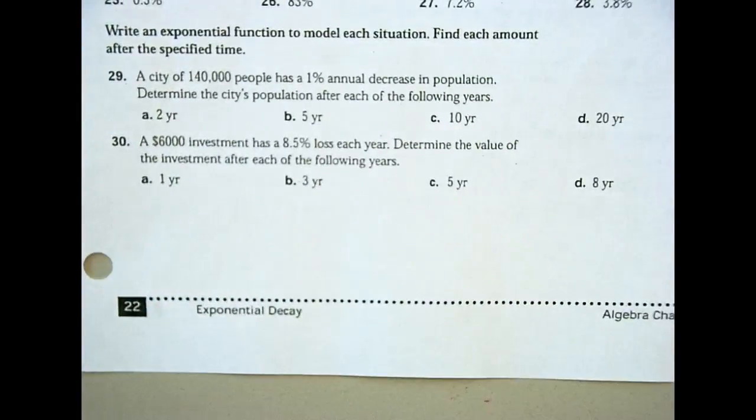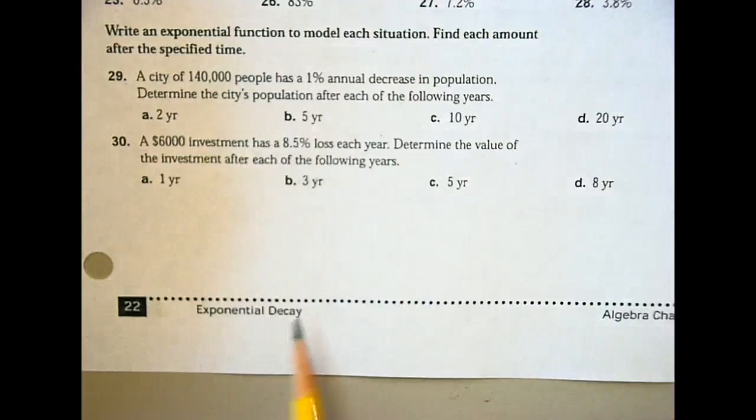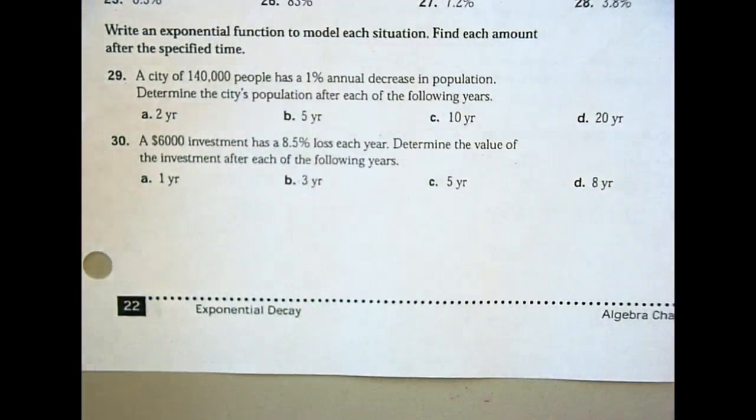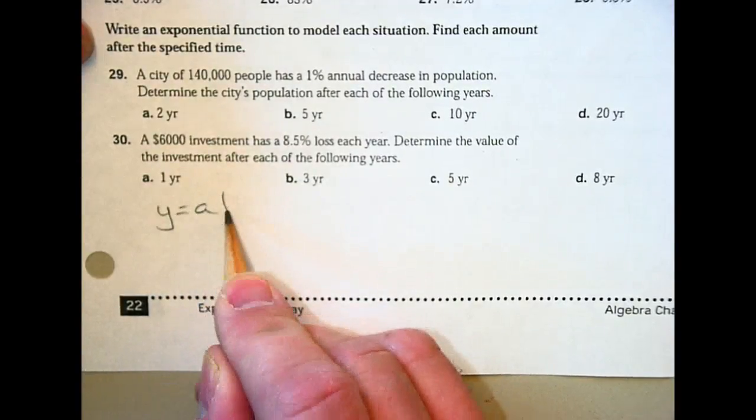That was one question that came up. The other question that comes up is a question like problem 30 that I want you to do tonight. However, if you're, if, whoa, that did not focus at all. Everyone read number 30. It's your, it's your story problem. Remember how you used to like stories? Now you're in school and you don't like them. It's like once upon a time, a $6,000 investment was, has an 8.5% loss each year. Determine the value of the investment after each of the following years so we can live happily ever after. That's a good story. That's, that's a math. That's my end. Okay?